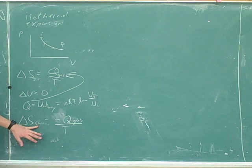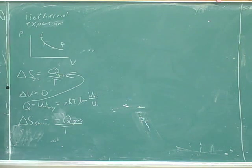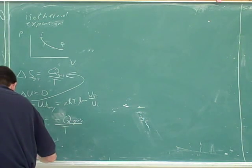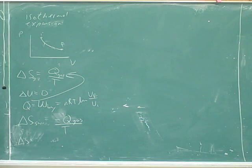So this would give us the delta S of the surroundings. So what do we know about the delta S of the universe here? It's equal to the sum of those two. And what would their sum be? It would be zero. That's right.